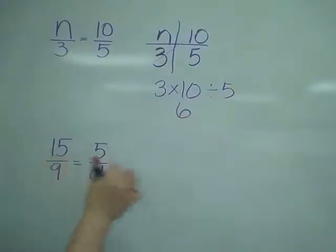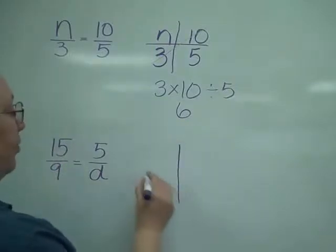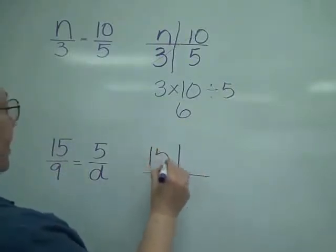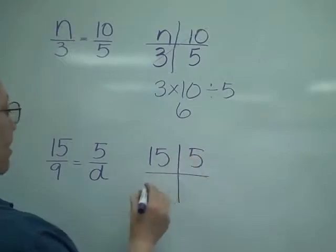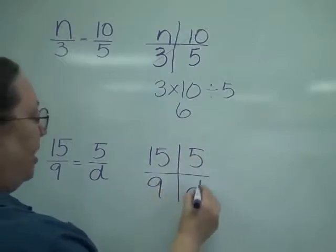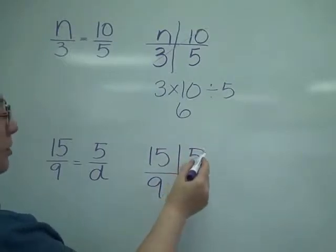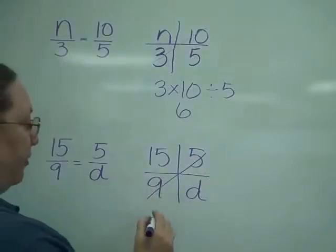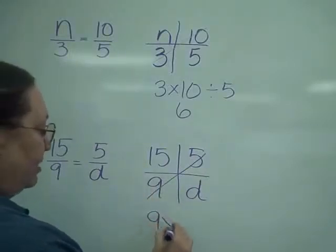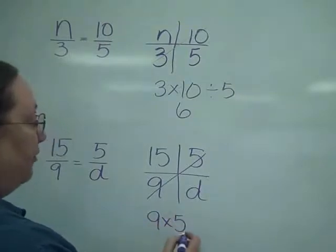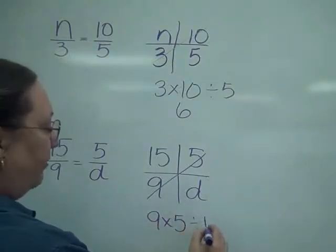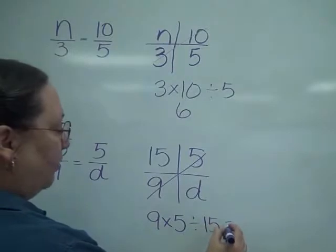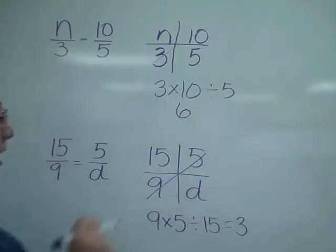Okay, likewise down here. I'm going to set it up into my grid. So I've got 15, 5, 9, and d. I'm going to cross multiply. I multiply the 2 I can, and I divide by the 3rd. So I've got 9 times 5 is 45, divided by the 15 is equal to 3. So 3 is the number that I'm looking for.